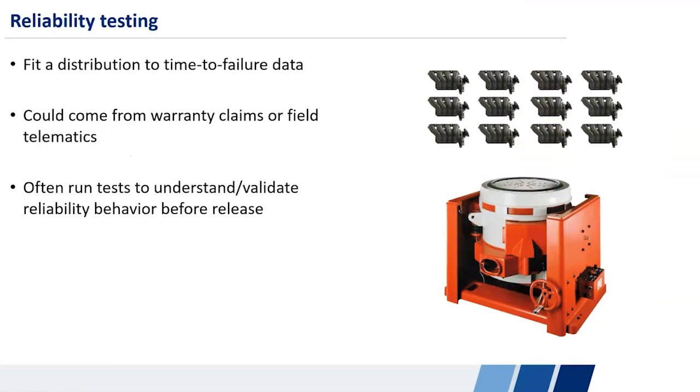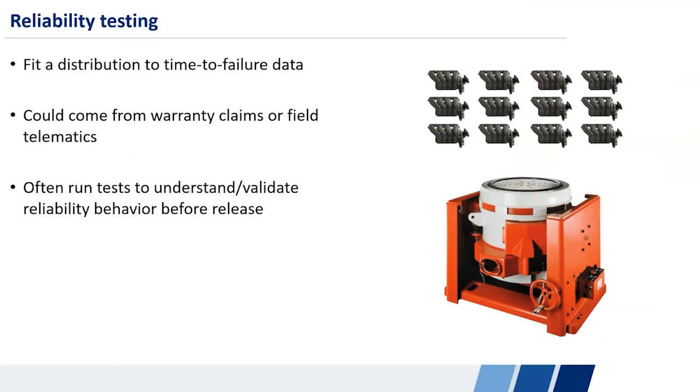It could come from field data. Most likely you already have field data, even if you don't have any sort of formalized reliability program. So you'll have warranty claims or maybe some sort of telematics that will tell you approximately how long things have been operating and whether they have failed or not. That's very nice. But that has the obvious downside of having already failed in the customer's hands, having already manufactured lots and lots of parts and being very expensive and difficult and unwieldy to correct.